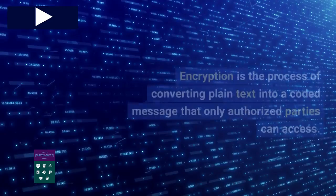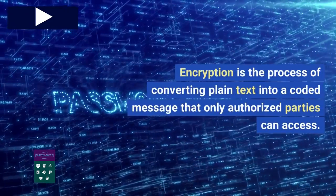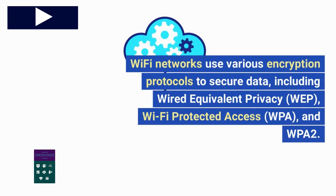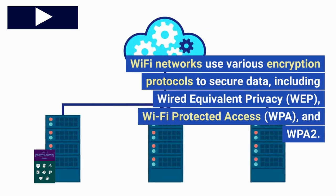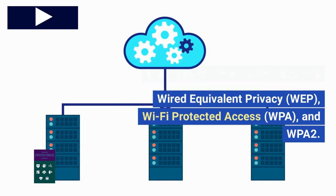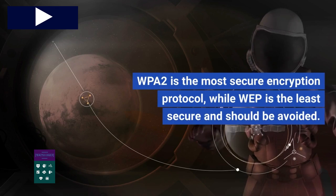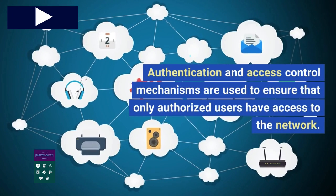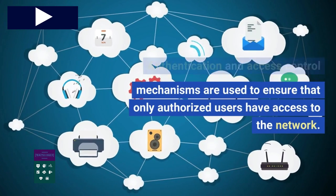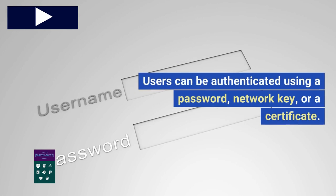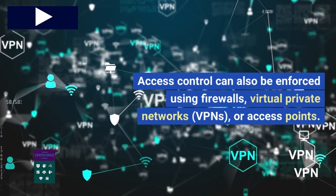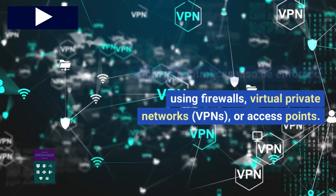Encryption is the process of converting plain text into a coded message that only authorized parties can access. Wi-Fi networks use various encryption protocols to secure data, including Wired Equivalent Privacy (WEP), Wi-Fi Protected Access (WPA), and WPA2. WPA2 is the most secure encryption protocol, while WEP is the least secure and should be avoided. Authentication and access control mechanisms are used to ensure that only authorized users have access to the network. Users can be authenticated using a password, network key, or a certificate. Access control can also be enforced using firewalls, virtual private networks (VPNs), or access points.